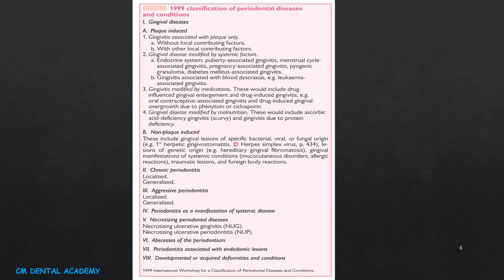Gingival diseases were further classified as those with endodontitis. Chronic periodontitis was classified as localized and generalized, as was aggressive periodontitis. Necrotizing periodontal diseases were classified as gingivitis, necrotizing ulcerative gingivitis, and necrotizing ulcerative periodontitis.